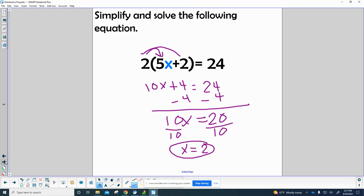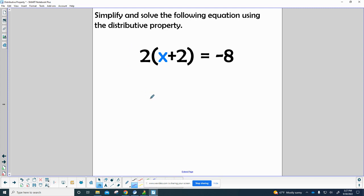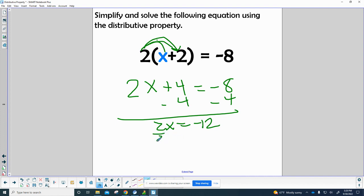Alright, so far so good. We got another one that's similar. Let's keep our distributive property going: 2 times x and 2 times 2. So 2 times x would just be 2x, 2 times 2 is 4, and all of that equals negative 8. Let's start solving for x by subtracting 4 from both sides. That gives us 2x equals negative 12. Then we divide by 2 and we end up with x equals negative 6.